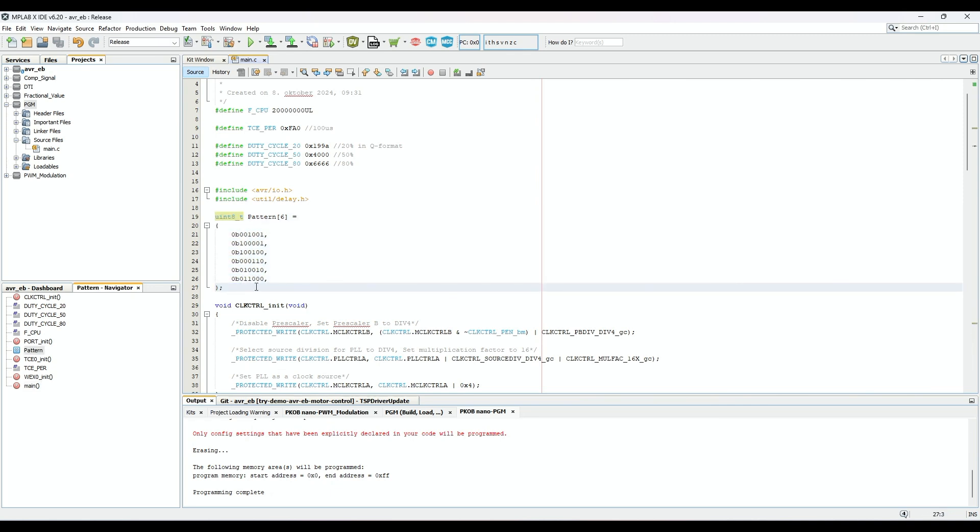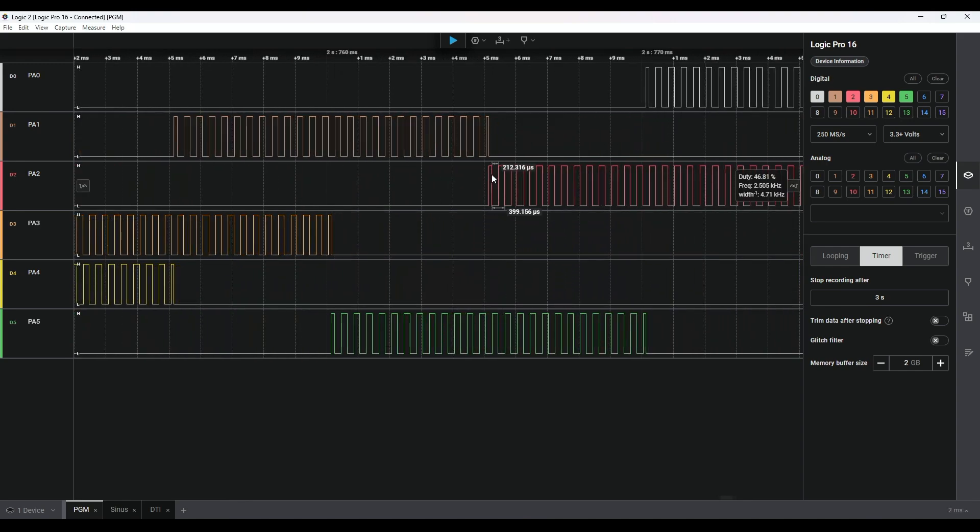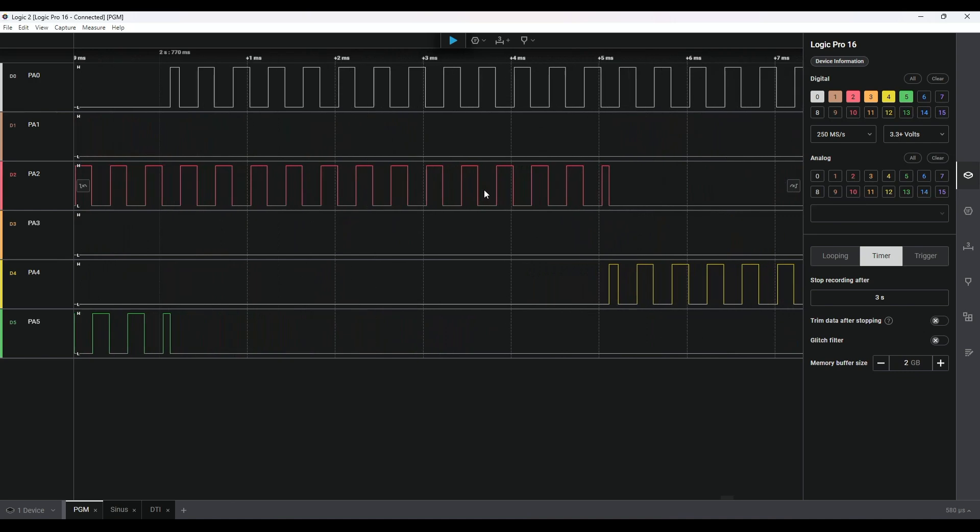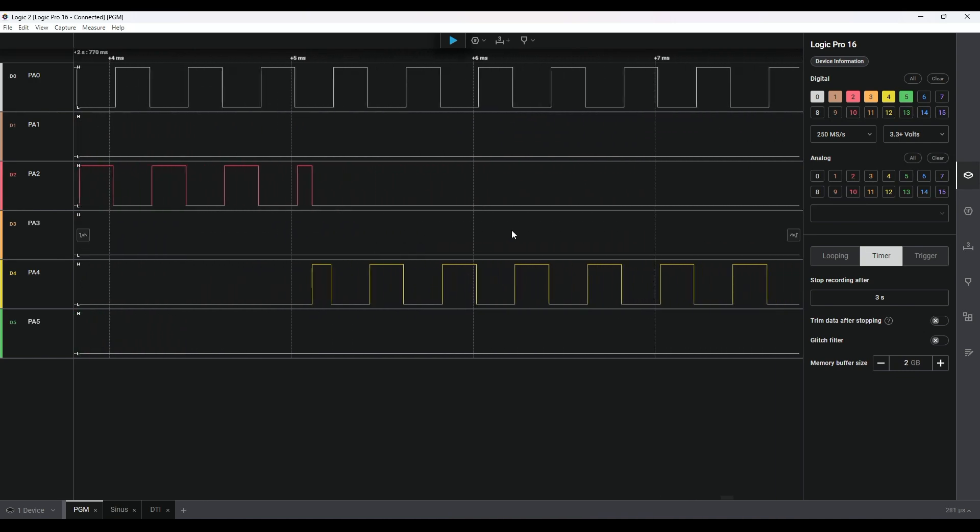This mode is very useful if you want to make specific patterns. For example, if you want to spin a BLDC in a six-step commutation, you can make those individual steps in this pattern generation mode.